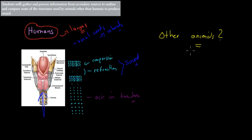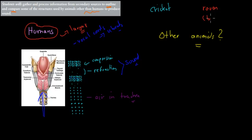But then we could ask the question: how do other animals produce sound? Do they have the same kind of system — larynx and vocal cords — or do they have different types of systems? That's what we're going to cover in this video, because the dot point says students will gather and process information from secondary sources to outline and compare some of the structures used by animals other than humans to produce sound. I've covered two examples: the cricket and the raven, or generally just a bird.